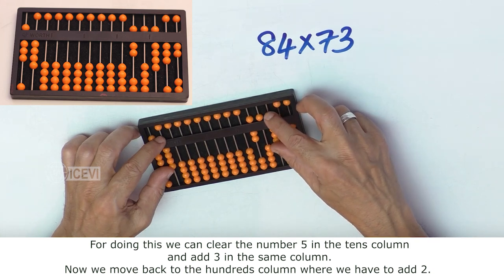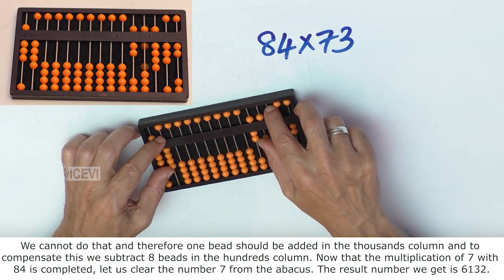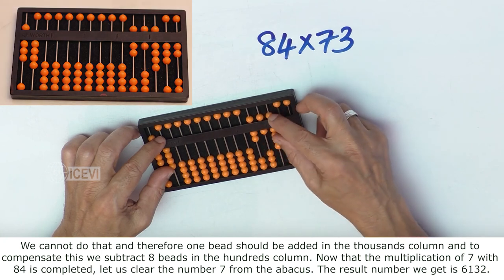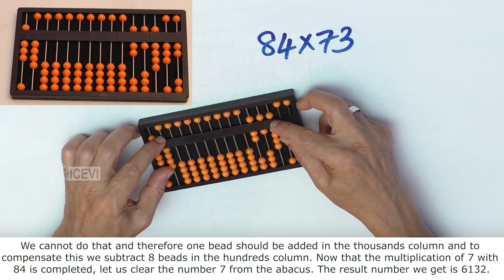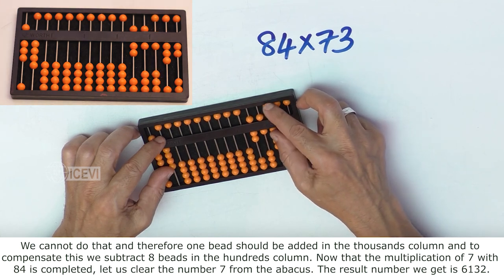Now we move back to the 100th column where we have to add 2. We cannot do that and therefore 1 bead should be added in the 1,000th column. To compensate this we have to subtract 8 in the 100th column.